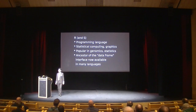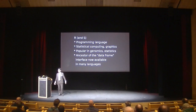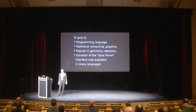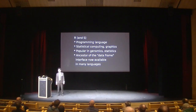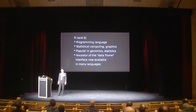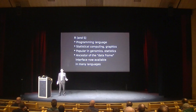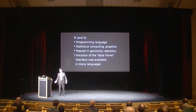R is a programming language used for statistical computing and graphics. It's quite popular in genomics and statistics originally, although it's used much more widely now. Many other languages have adopted the data frame structure that comes from S, and if you've used that, it traces itself back to S.